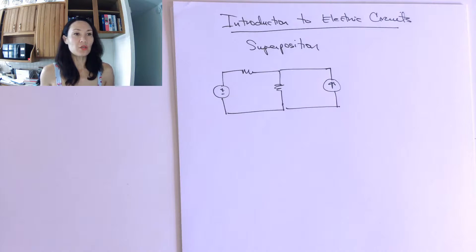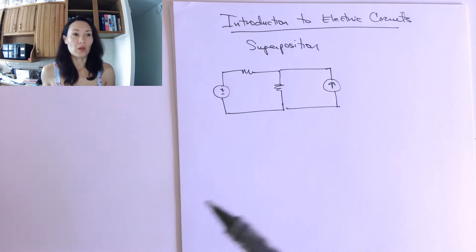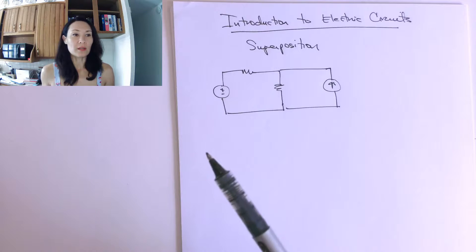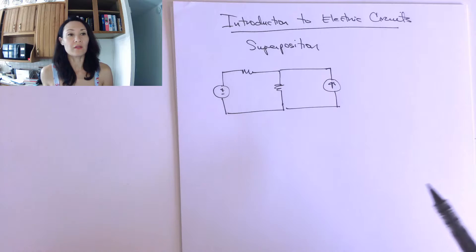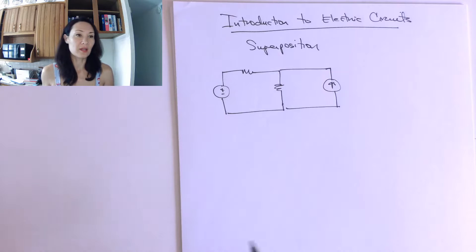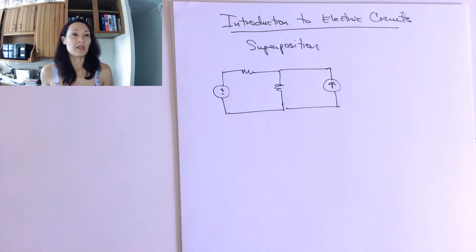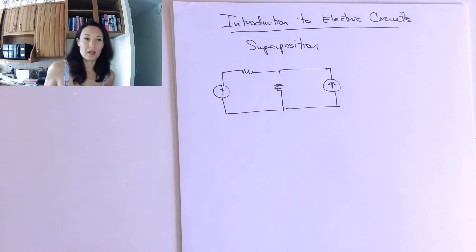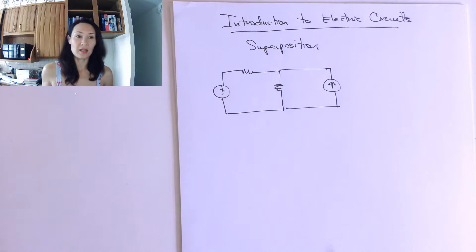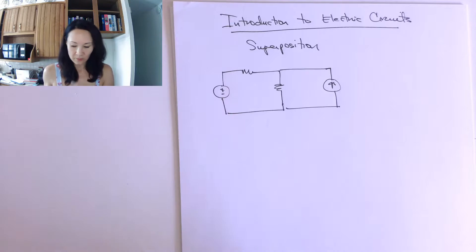Generally the process is we're going to consider one source at a time. That means we want to turn off the other source, solve the circuit, and then put in that other source and turn off the other one, solve the circuit, and then we're going to add our two results together.